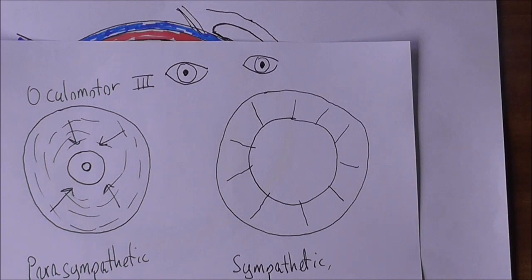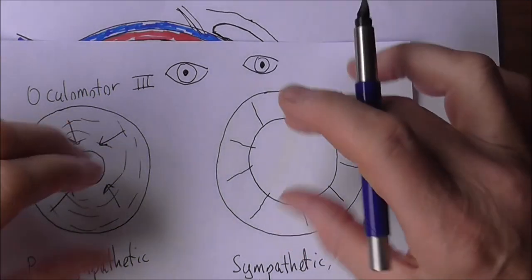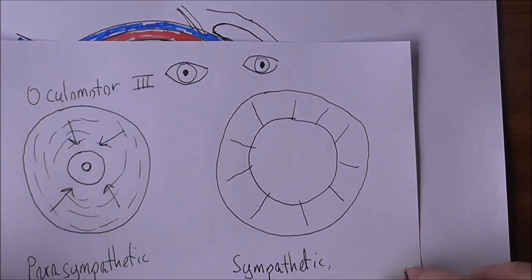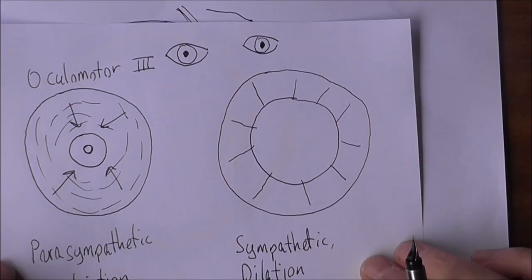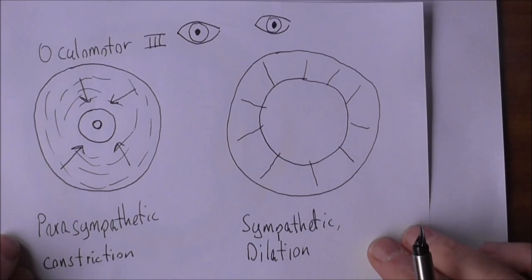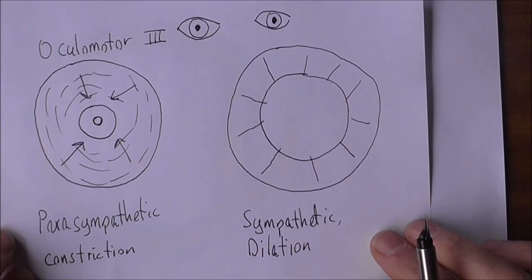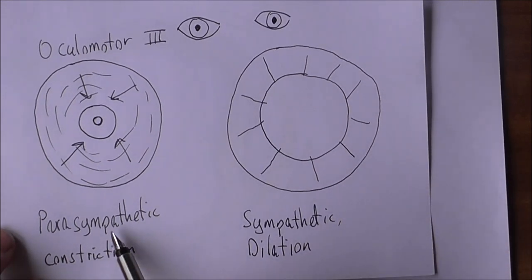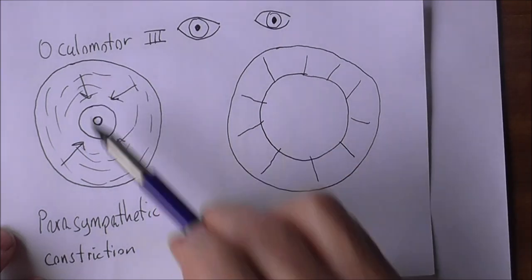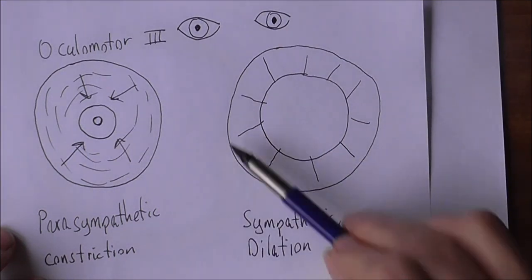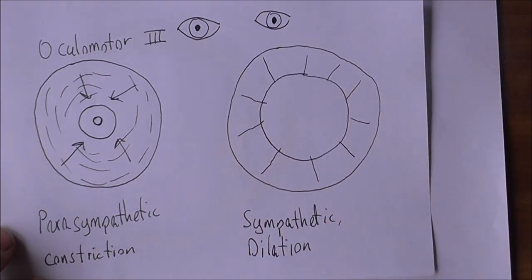So an important clinical indicator. We want to look at how the pupils are constricting, how quickly they constrict, but above all, making sure that they are equal. But in the physiological situations, it's the parasympathetic that's causing the constriction and the sympathetic which is causing the dilation. The circular fibers constricting to bring about the constriction, and the radial fibers constricting to bring about the dilation.